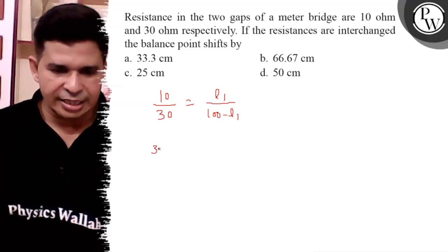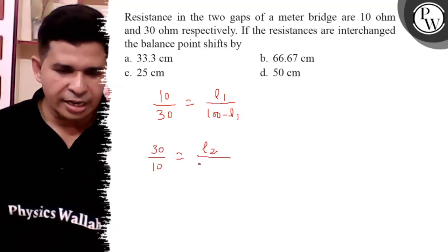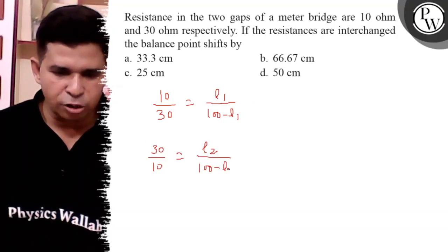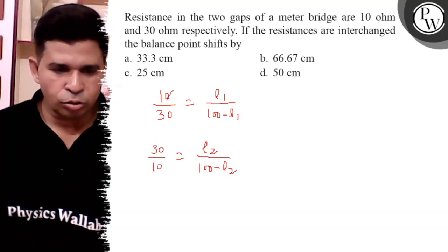Now these are interchanged, 30 by 10, so balancing length is L2 and it is 100 minus L2. So solve these two equations, find the value of L1 and L2.